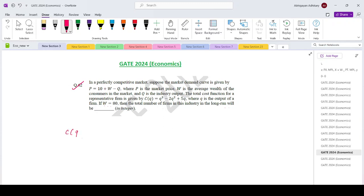So the cost function of any representative firm is Q cube minus 2Q square plus 5Q. And the market demand function is P equals 10 plus W minus Q. W is 80, so that is 90 minus total Q.